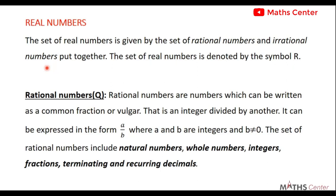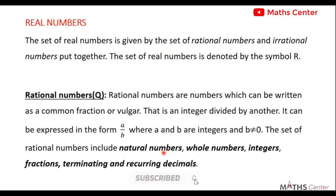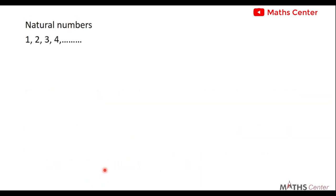The set of rational numbers includes natural numbers, whole numbers, integers, fractions, terminating and recurring decimals. Natural numbers begin from 1, 2, 3, 4 and continue up to infinity.